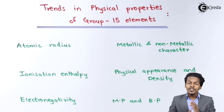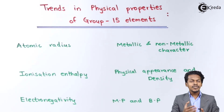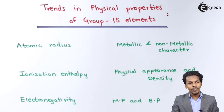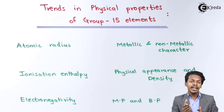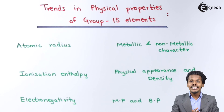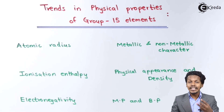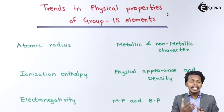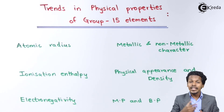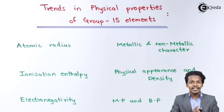Bismuth, having metallic character, is present in a mono-atomic state. Regarding bonding, nitrogen forms three bonds with another nitrogen atom (a triple bond), whereas phosphorus and arsenic form single bonds between their atoms. This is a key structural difference between nitrogen and the heavier group 15 elements.